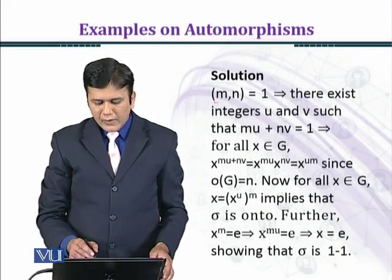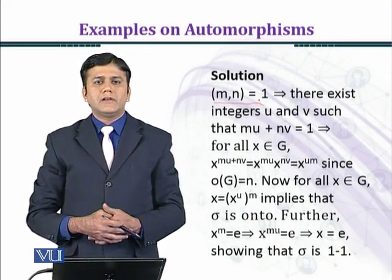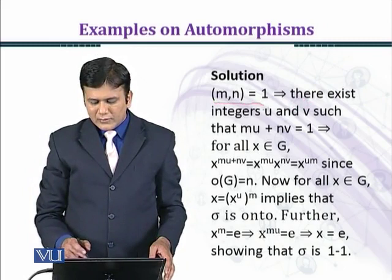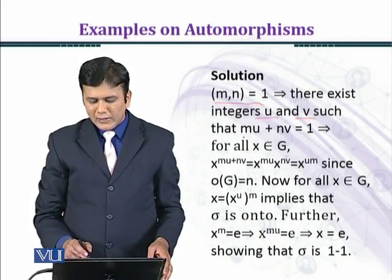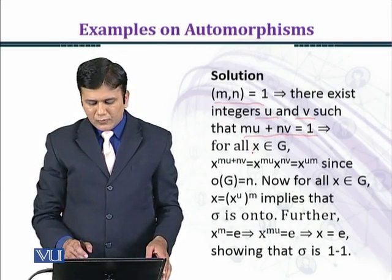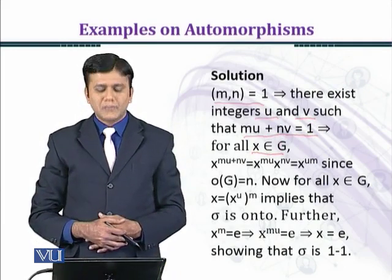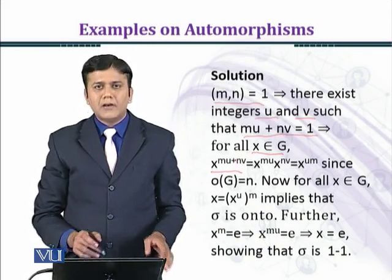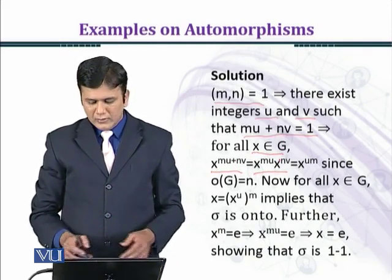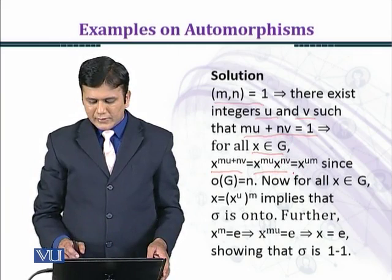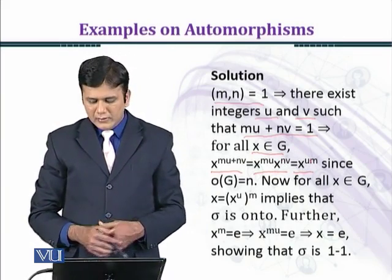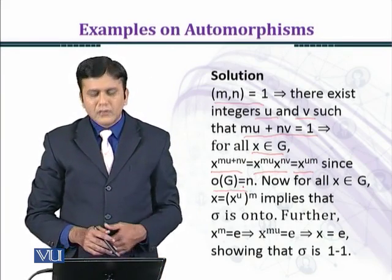gcd of m and n equal to 1, that is m and n are relatively prime. There exist integers u and v such that mu + nv = 1. It implies that for all x belonging to G, x raised to power mu + nv equal to x^(mu) times x^(nv). We will apply exponent rule to the equality: x^(um) since order of G equal to n, so x raised to power n is identity element.